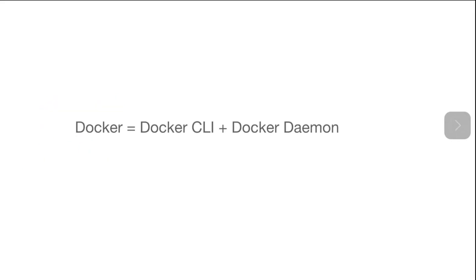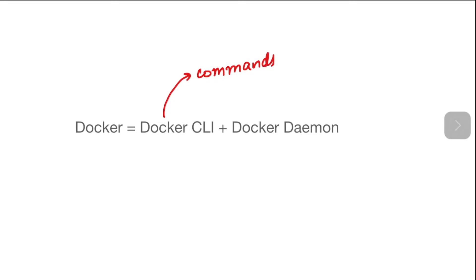When we install Docker on our machine, we are basically installing two things: one is the Docker CLI and the other is the Docker Daemon. All the commands that we write on the terminal are parts of the Docker CLI — commands such as docker ps, docker run, docker stop — all are parts of the Docker CLI.